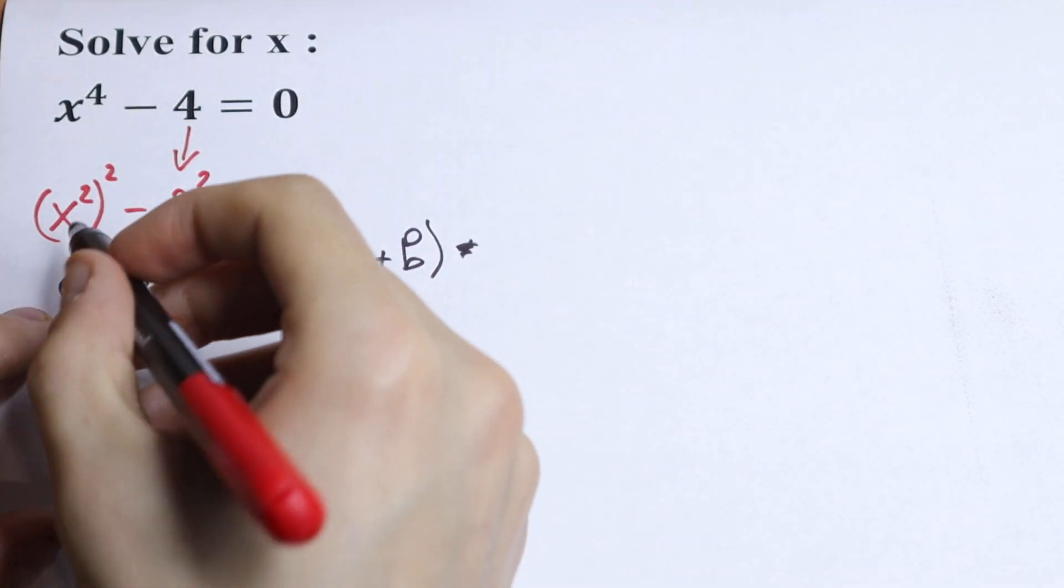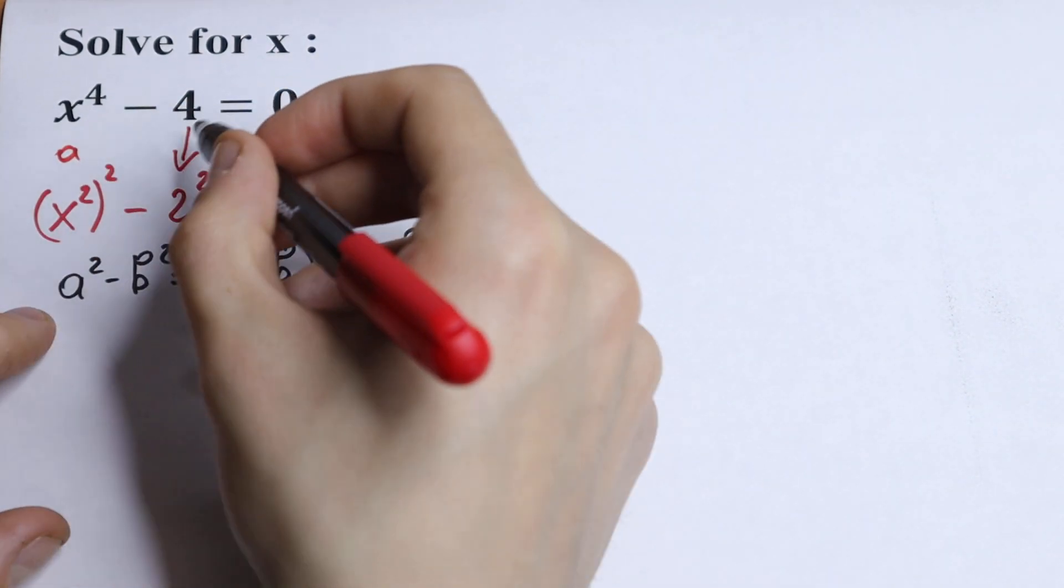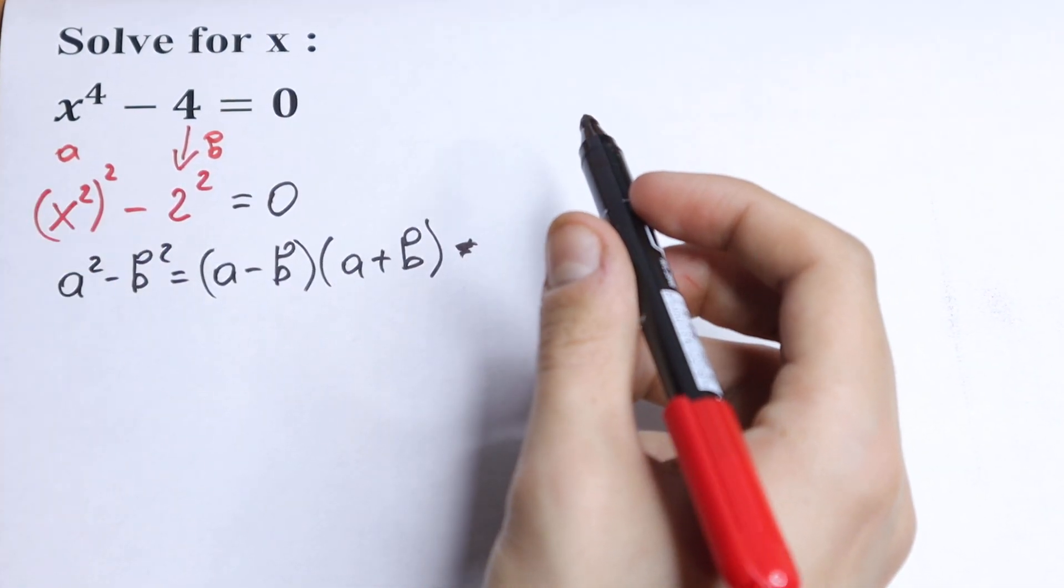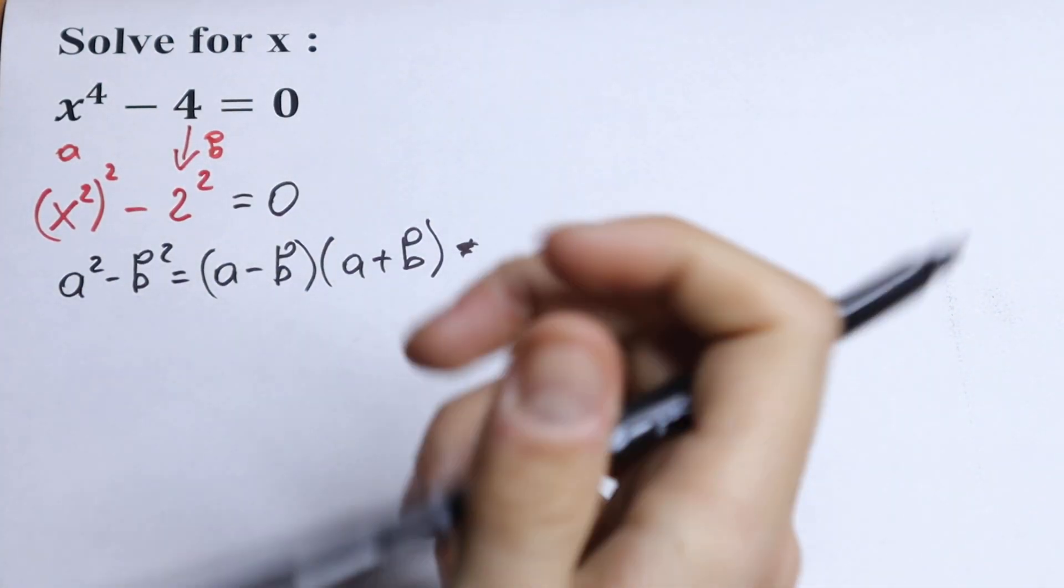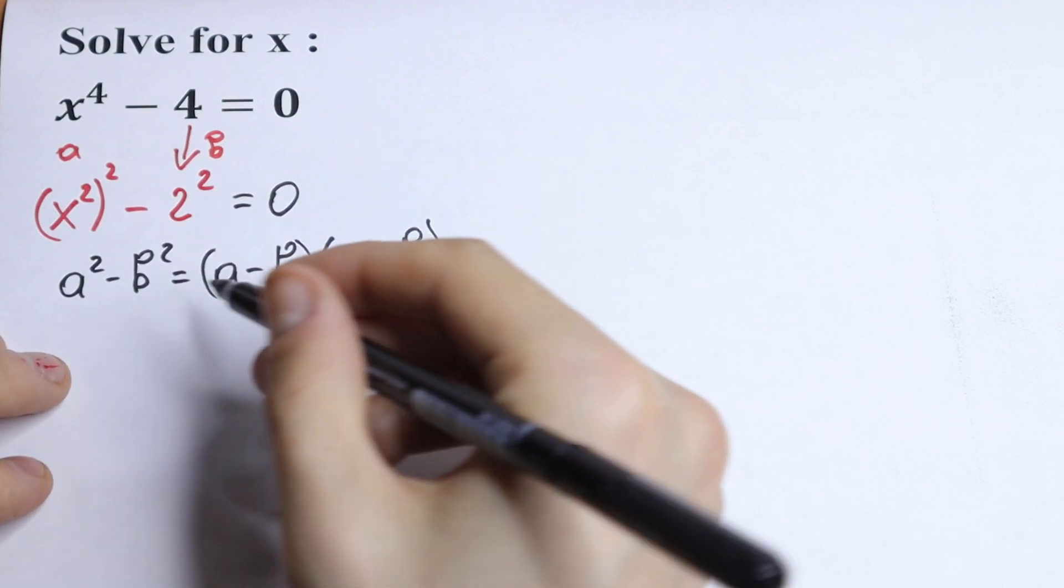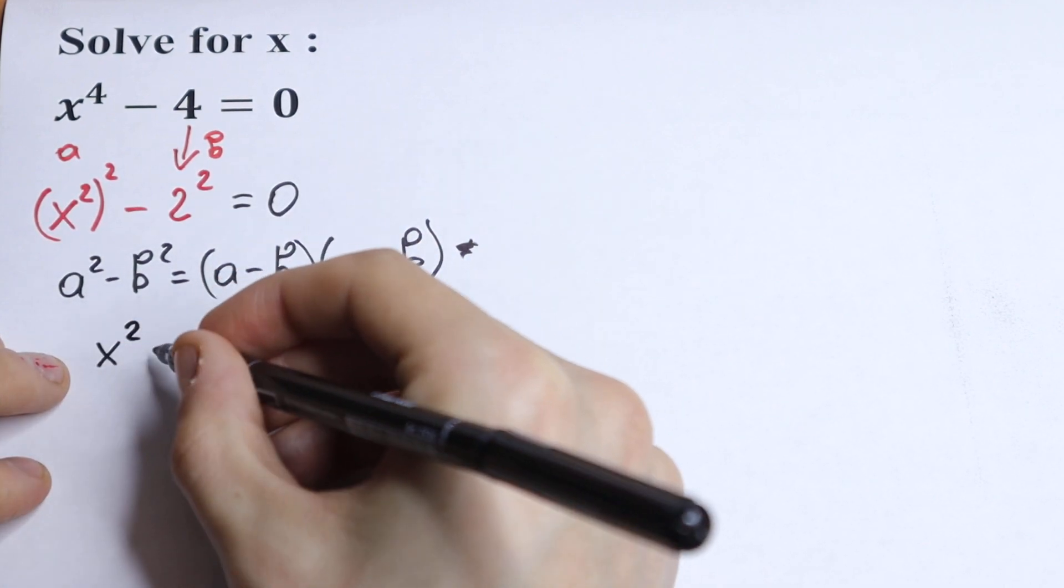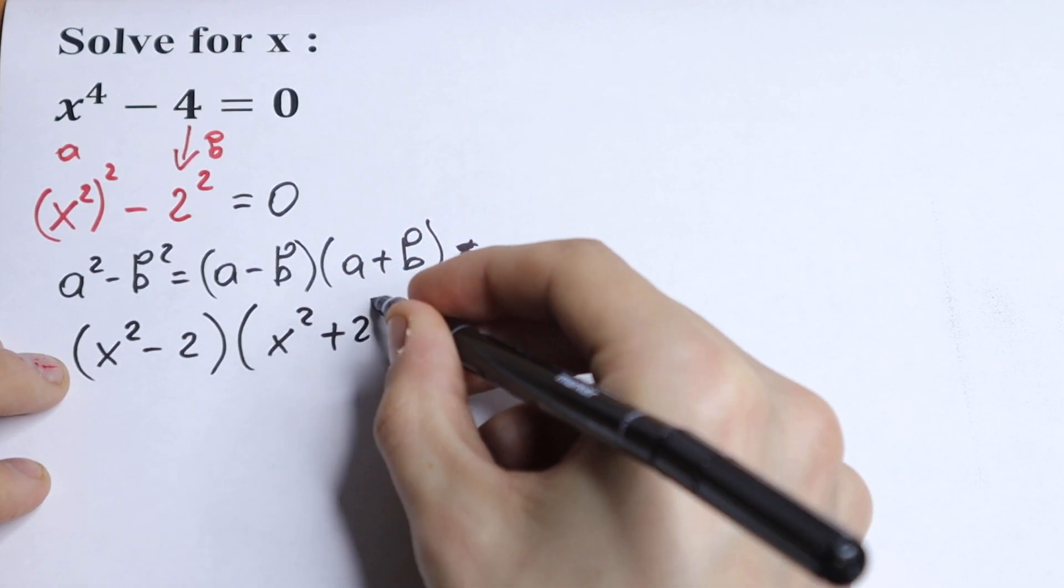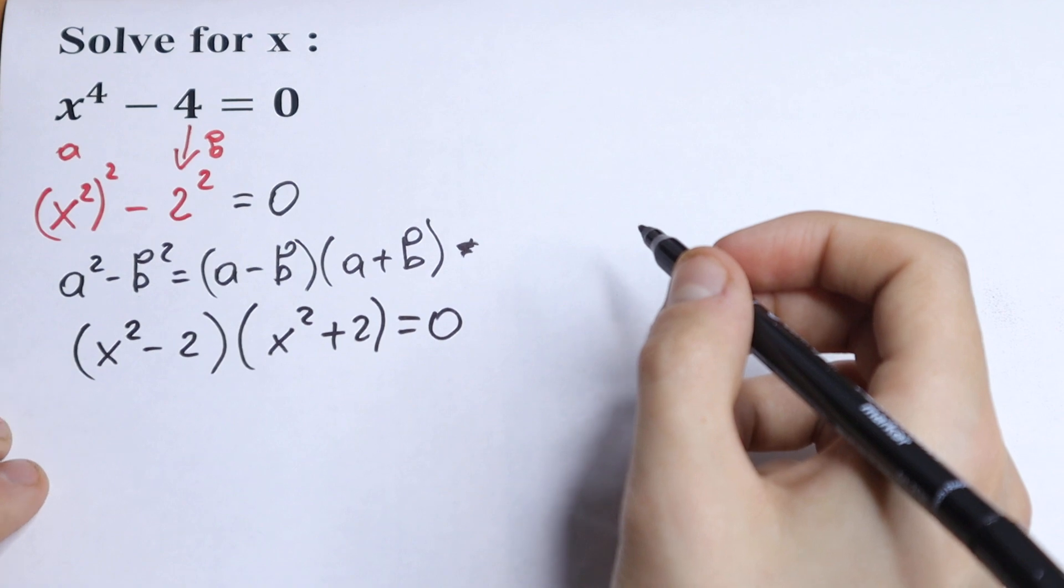So this is our a and this is our b. a is our x square and b is our 2. So we will have an interesting case. We will have x square minus 2 times x square plus 2 equal to 0.